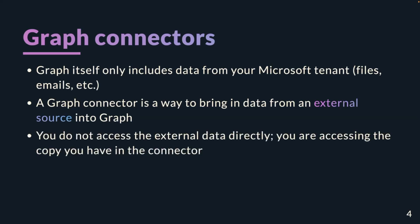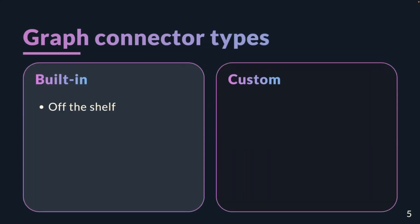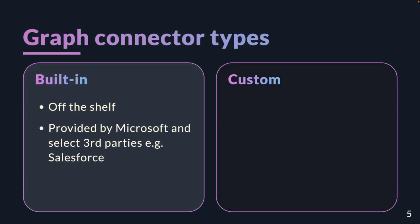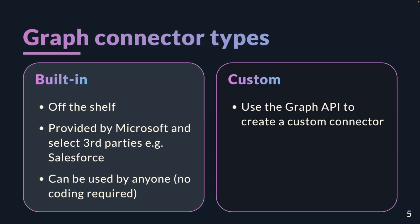One important note: unlike calling an API, you're effectively ingesting that data into Microsoft Graph — it's a copy of the data. It's up to you to make sure it's kept up to date and any changes are reflected. You're not pulling down live data as such. There are two types of connectors. The first is built-in connectors — off-the-shelf, turnkey solutions. You can choose from many; Salesforce is one example. However, if you need anything else, you need custom connectors, which work with any data source as long as you can programmatically extract that data.